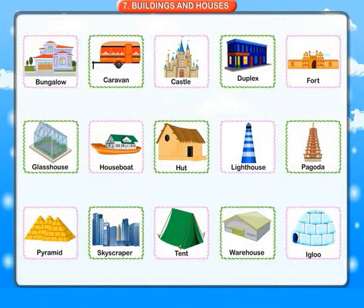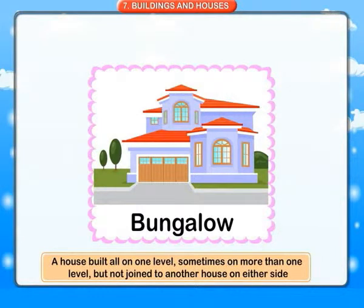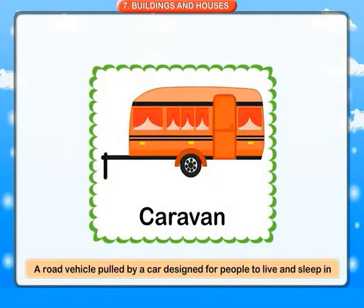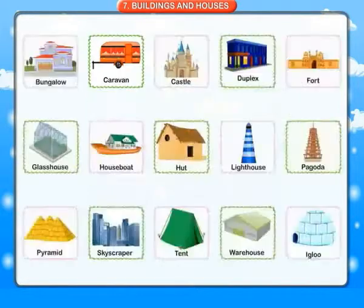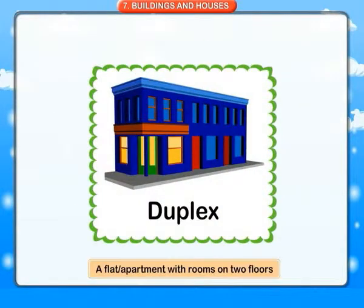Buildings and houses. Bungalow: a house built all on one level, sometimes on more than one level, but not joined to another house on either side. Caravan: a road vehicle pulled by a car, designed for people to live and sleep in.